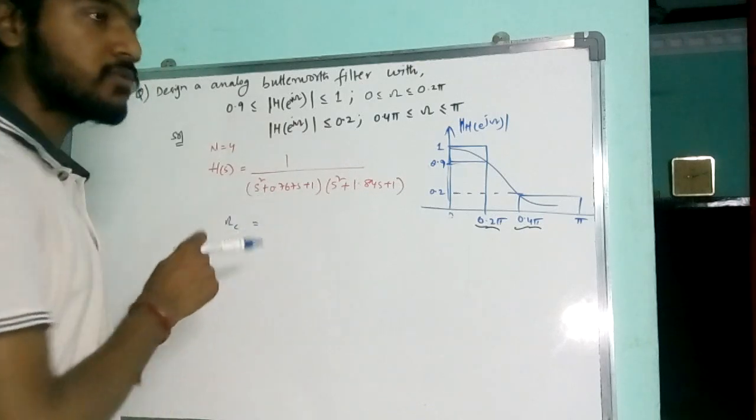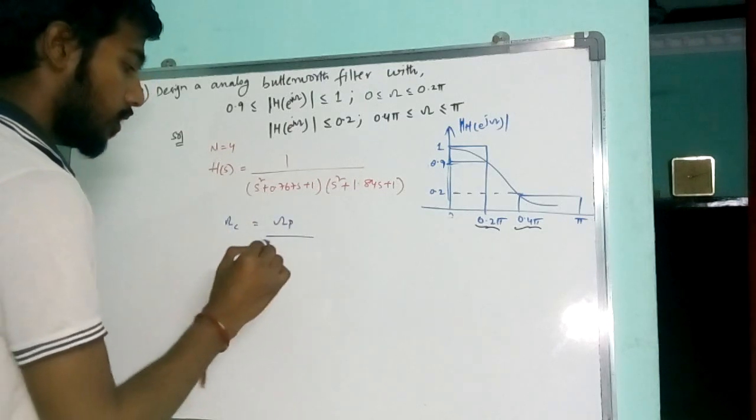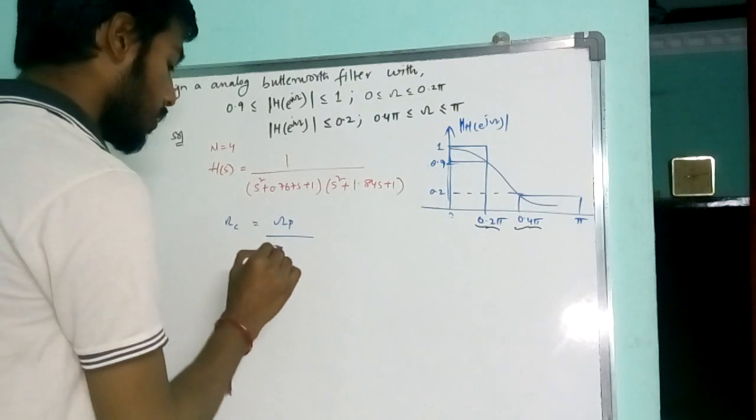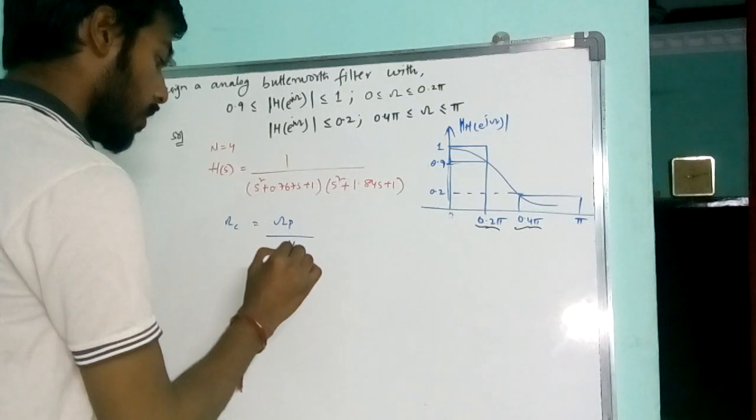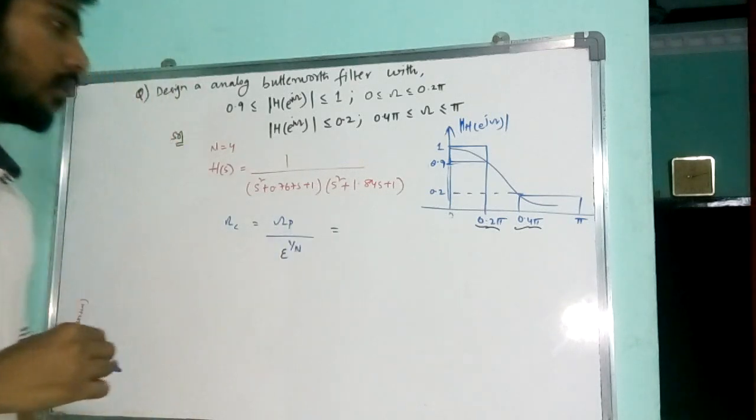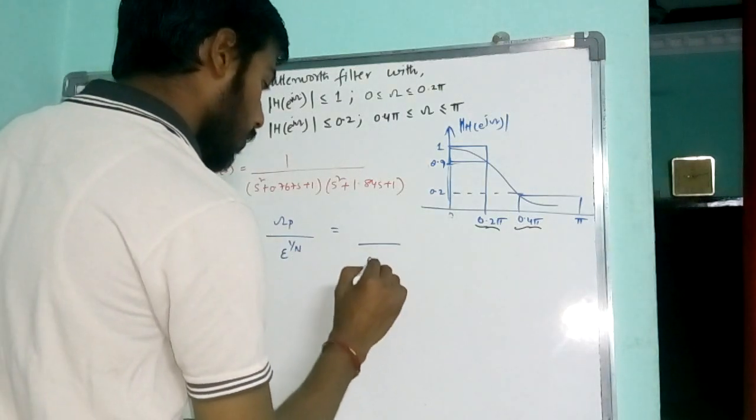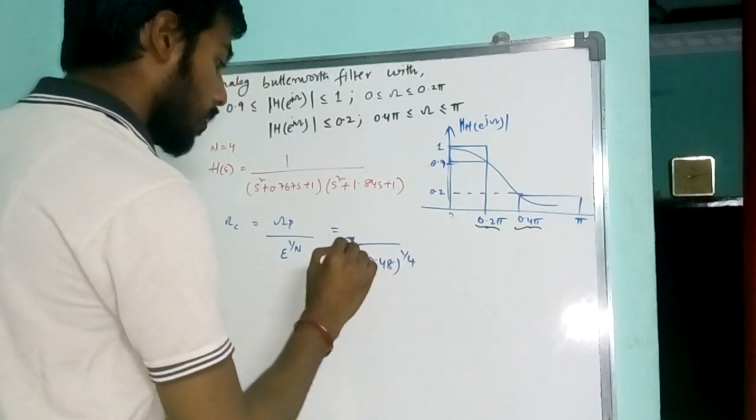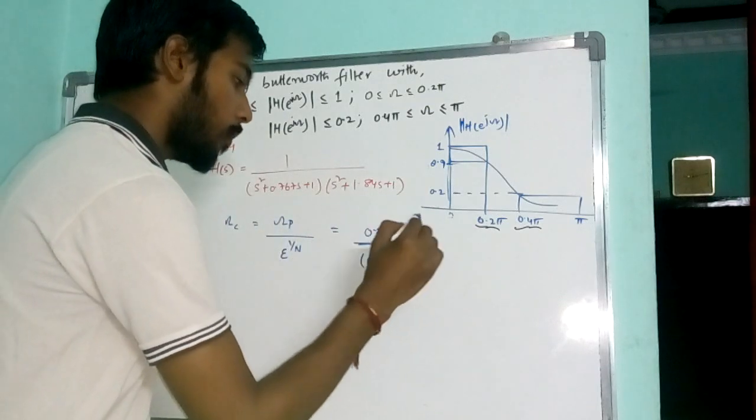So cutoff frequency in terms of passband or in terms of stopband you can take. I will take in passband, whenever I take passband it should be epsilon. So omega p into epsilon to the power 1 by n. My epsilon value was 0.48, 0.48 power, my n value is 4 and omega p value is 0.25.